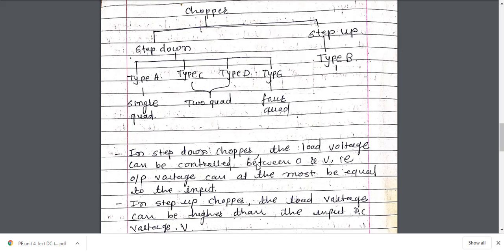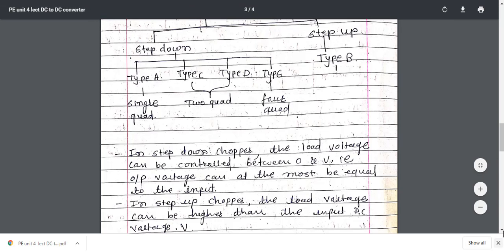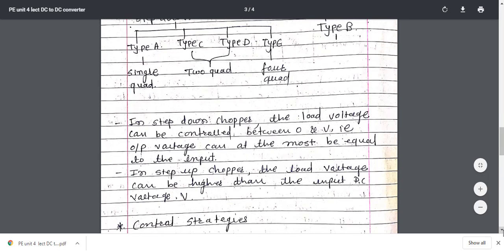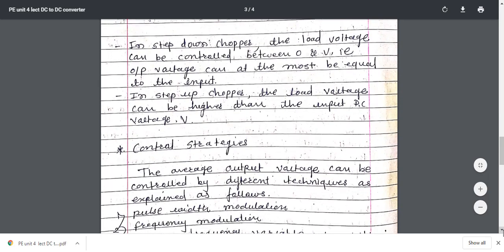In the step-down chopper, the load voltage can be controlled between zero and V — the output voltage can be at most equal to the input. In the step-up chopper, the load voltage can be higher than the input DC voltage. So the step-down chopper controls output between 0 and V, while the step-up chopper provides output higher than the input DC voltage.